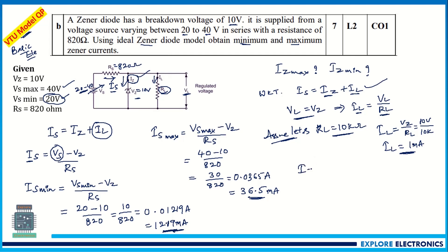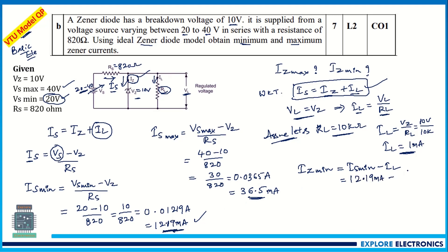Now let us find IZ_minimum. Rearranging IS = IZ + IL, we get IZ = IS − IL. So IZ_min = IS_min − IL = 12.19 mA − 1 mA = 11.19 milliamps. This is the minimum current flowing through the zener diode.